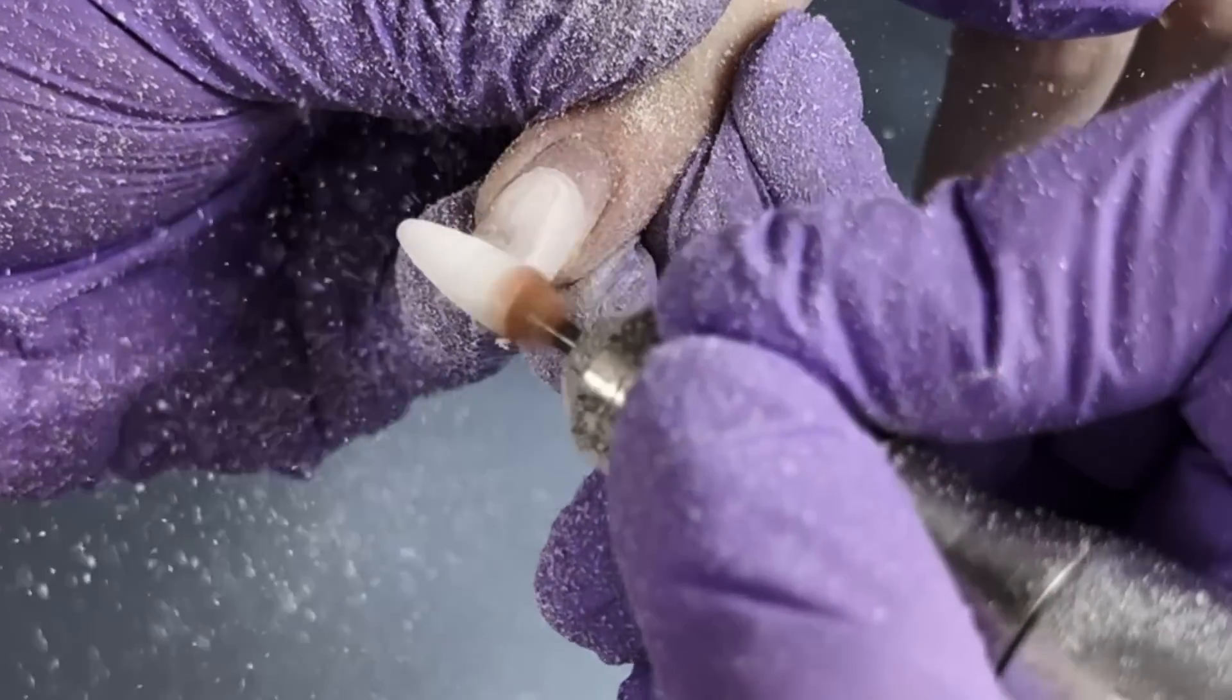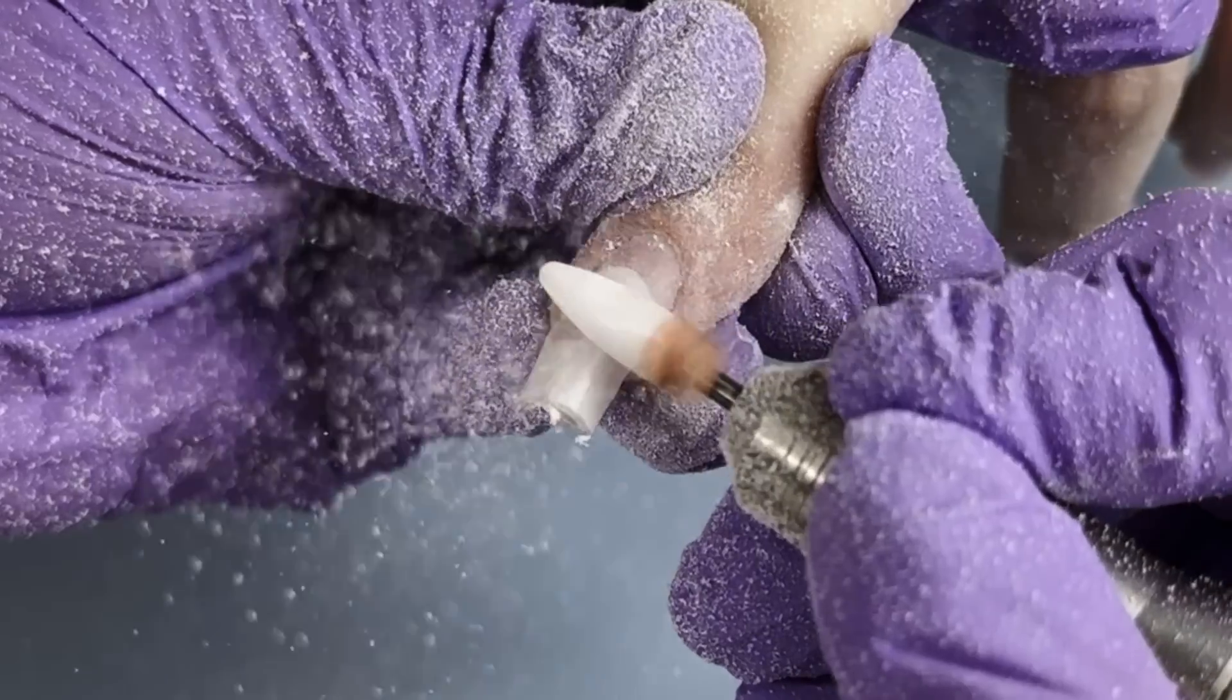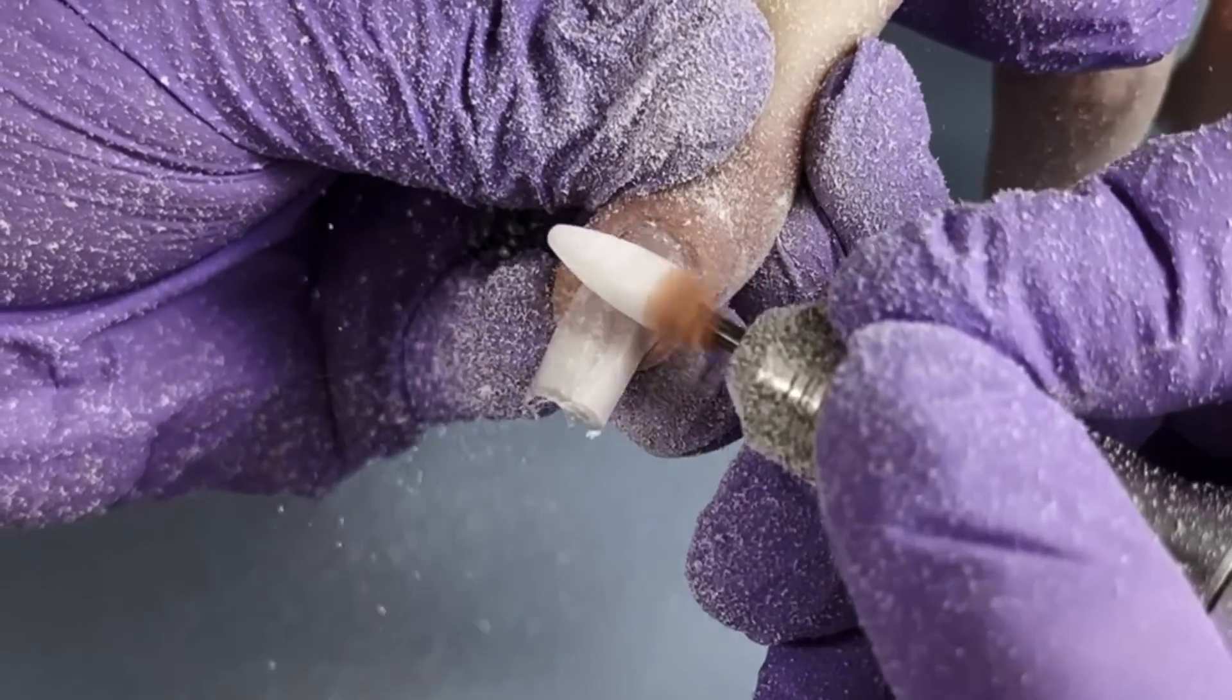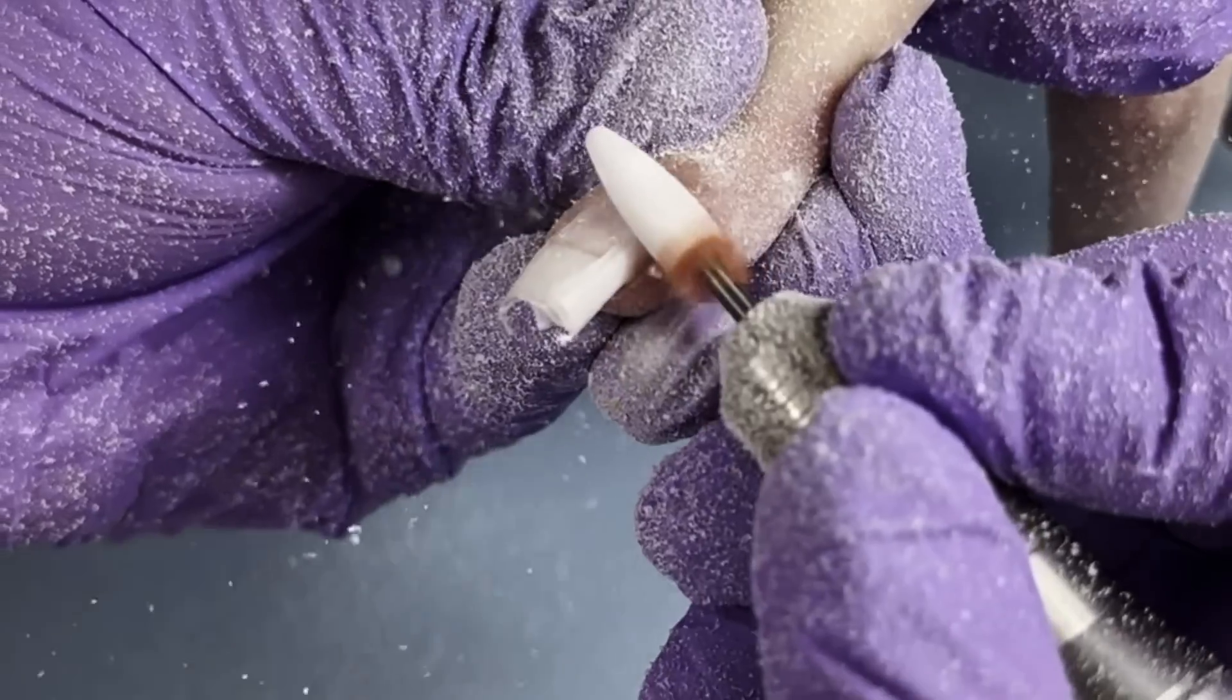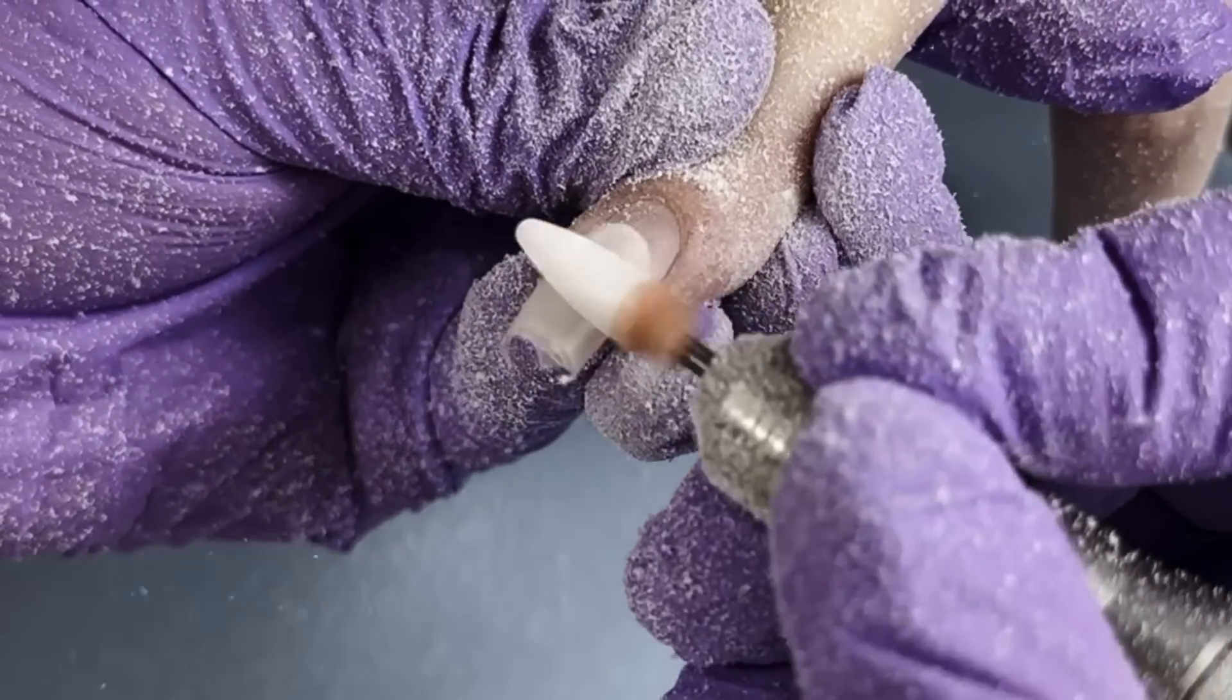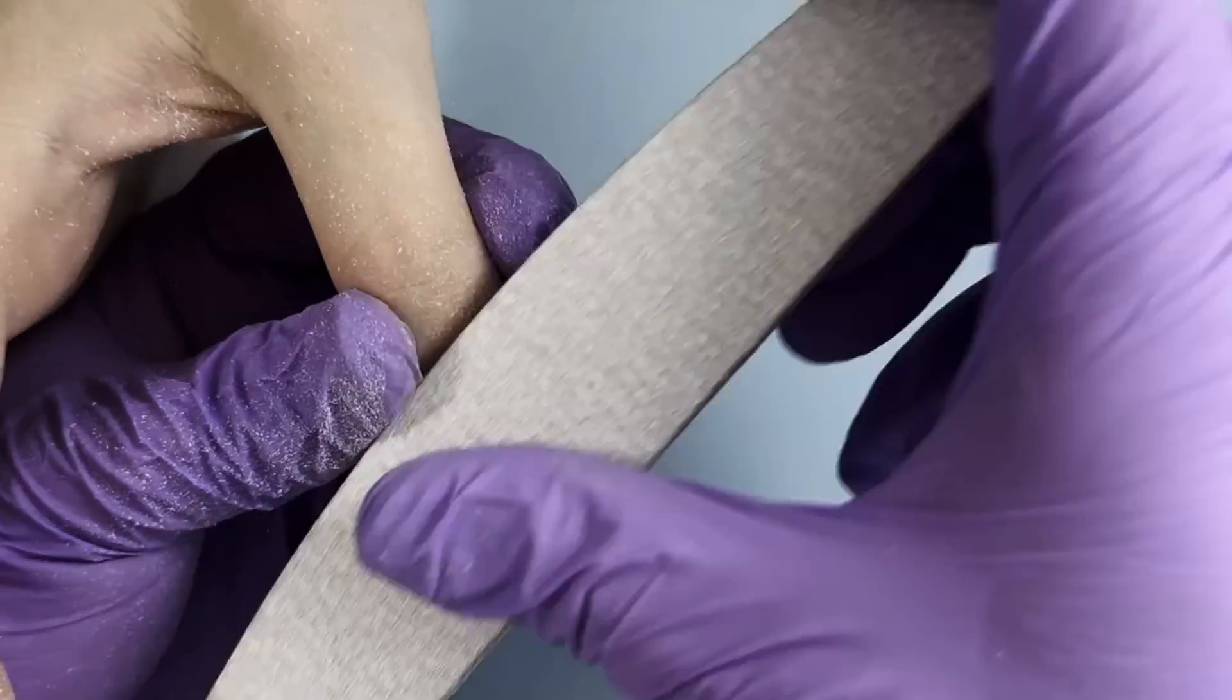In this tutorial I would like to show you how to do a sharp square shape. This shape is very popular when we are doing nail extensions because it's pretty easy to achieve if you're using tips or forms. But with natural nails it's more rare because normally it's kind of hard to get these sharp angles and edges of the nail.